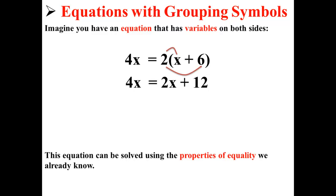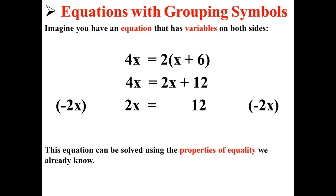Now we want to get x alone, so I subtract 2x from each side. This gives us 2x equals 12.